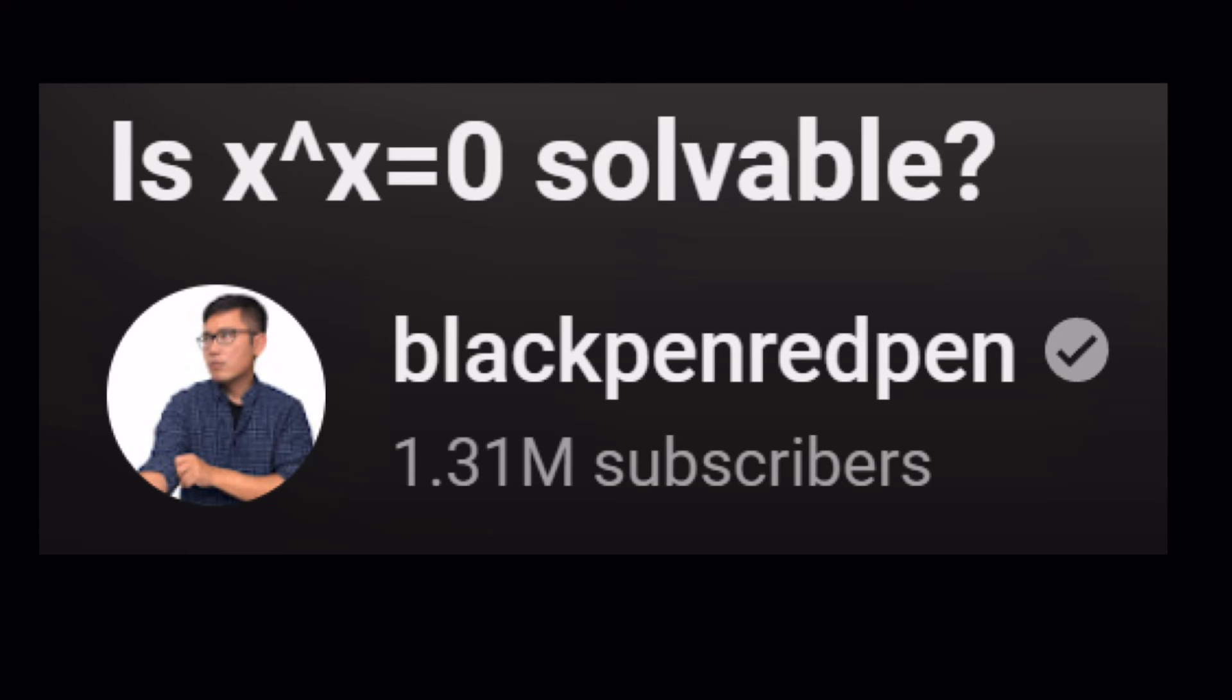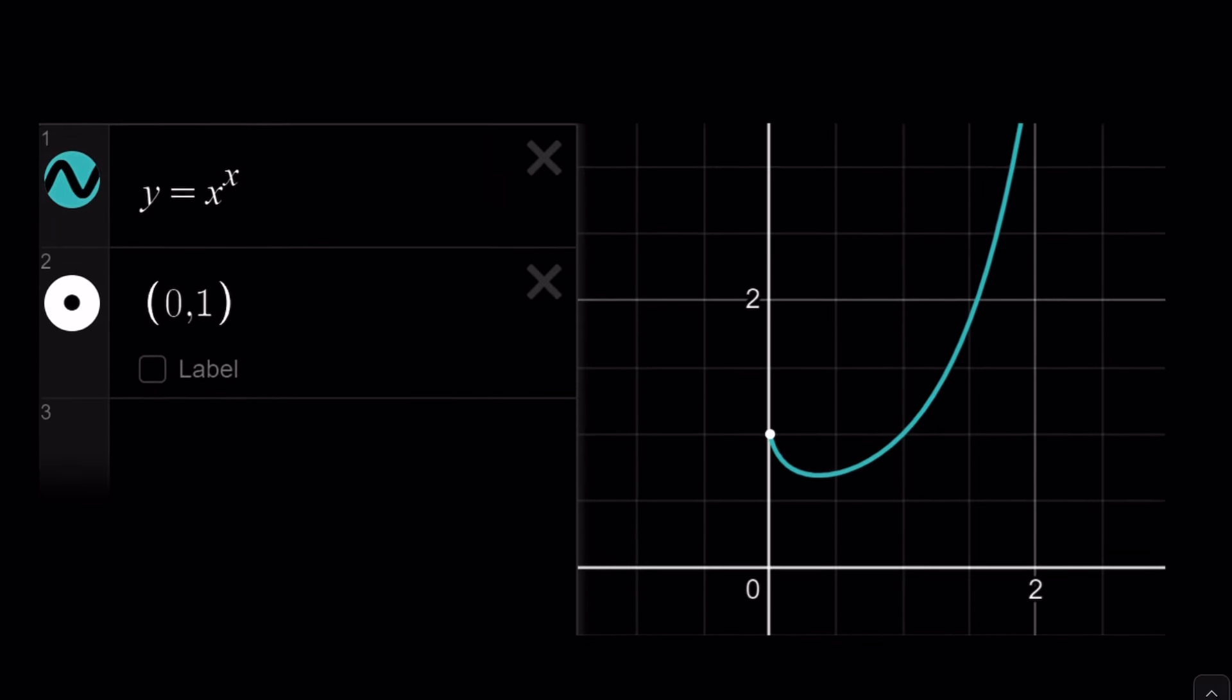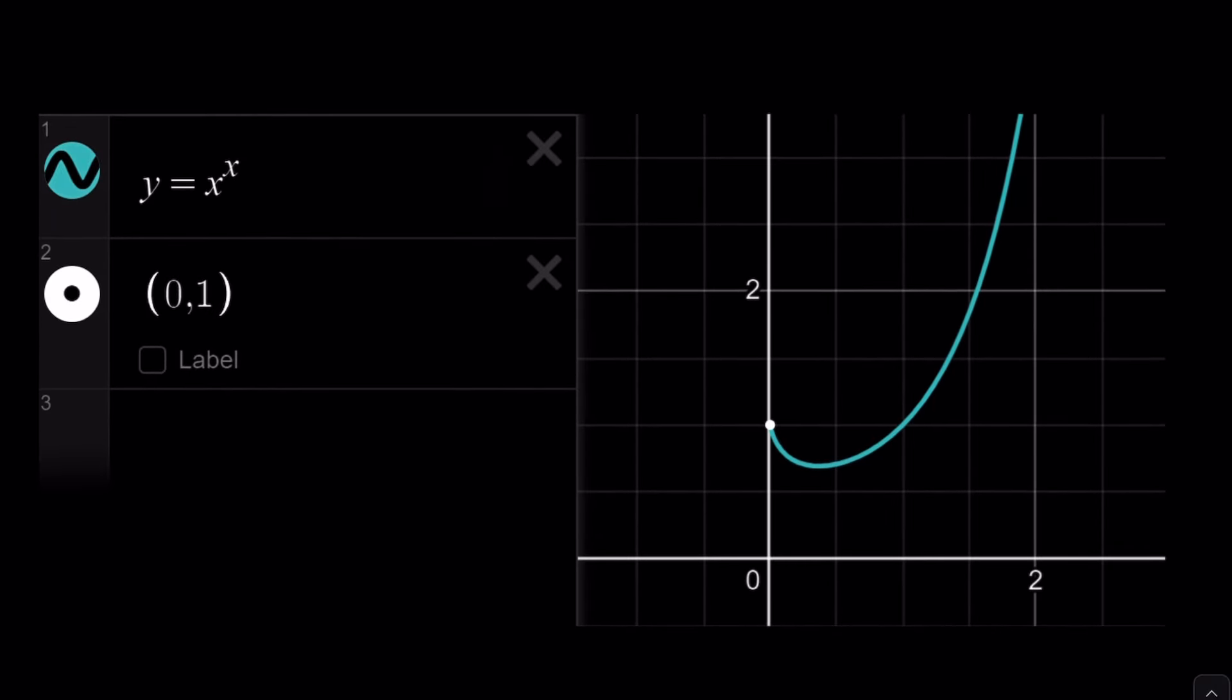But before we look at the equation, there's a couple different things I need to show you, including the graph. Can you graph y equals x to the power x? The answer is yes, you can. And this is what the graph looks like according to Desmos. As you can see, we have the starting point at 0, 1. And then our graph decreases and then makes a minimum and then increases.